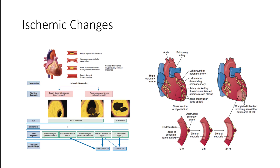We'll talk more about the zone of necrosis and infarction. Typically, when we start seeing changes in the myocardium, it starts with the subendocardium first, moving its way to the subepicardium — infarctions usually happen from the inside out. Quite often when we see ischemic changes or infarction, we're going to see changes to the ST segment. In the early minutes, we'll often see ST depression while there's still just ischemia.